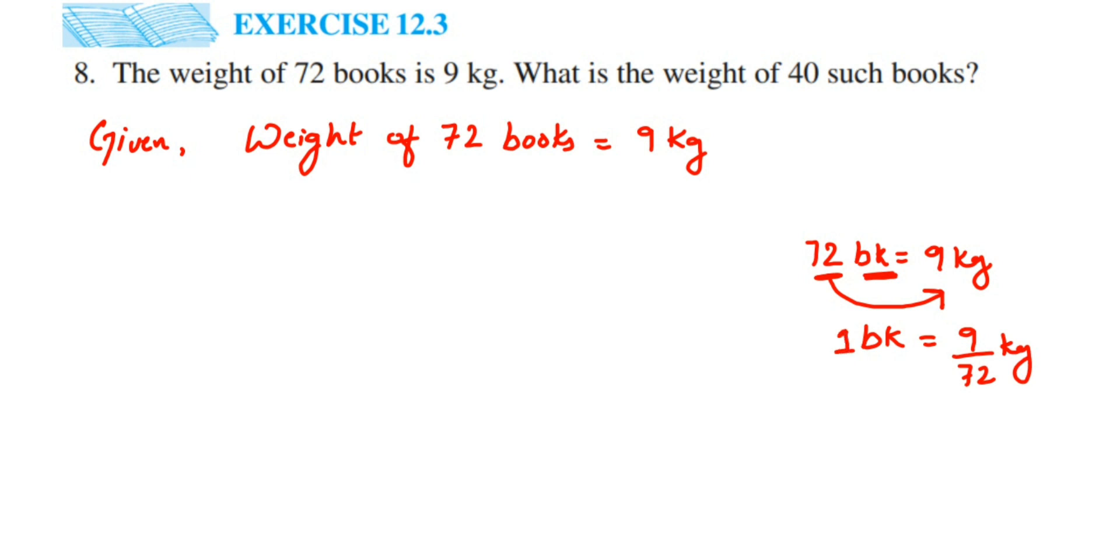So suppose you want to find out the, this is just finding out the weight of 1 book. Suppose you want to find out how many books are coming for 1 kg, for kg how many books are coming, like how many books are weighing 1 kg, then you have to transpose 9 to the other side.